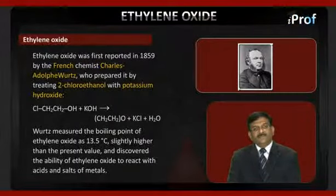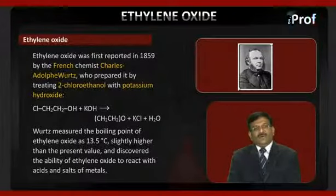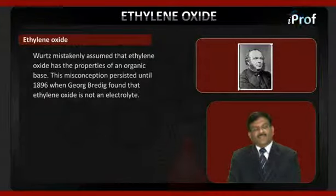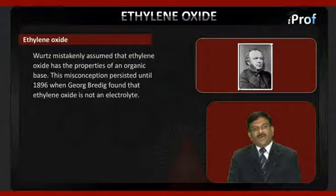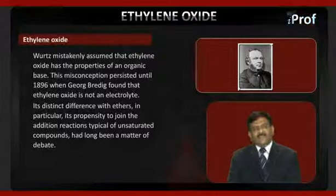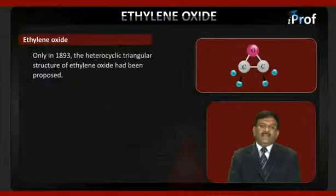Wurtz discovered the ability of ethylene oxide to react with acids and salts of metals, but mistakenly assumed that ethylene oxide has the properties of an organic electrolyte base. This misconception persisted until 1896 when George Braddock found that ethylene oxide is not an electrolyte. Its distinct difference from ethers — in particular its propensity for addition reactions typical of unsaturated compounds — had long been debated. Only in 1893 was the heterocyclic triangular structure of ethylene oxide proposed.